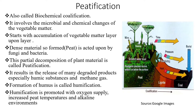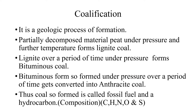In this figure you can see the peat. Peat, under pressure and with the passage of time, undergoes certain changes and forms lignite and ultimately coal. Peatification, being the first process in coal formation, is followed by coalification, which is the geologic process of formation. It takes millions of years for coal formation. The partially decomposed material — peat — formed under pressure and further temperature, forms lignite coal.